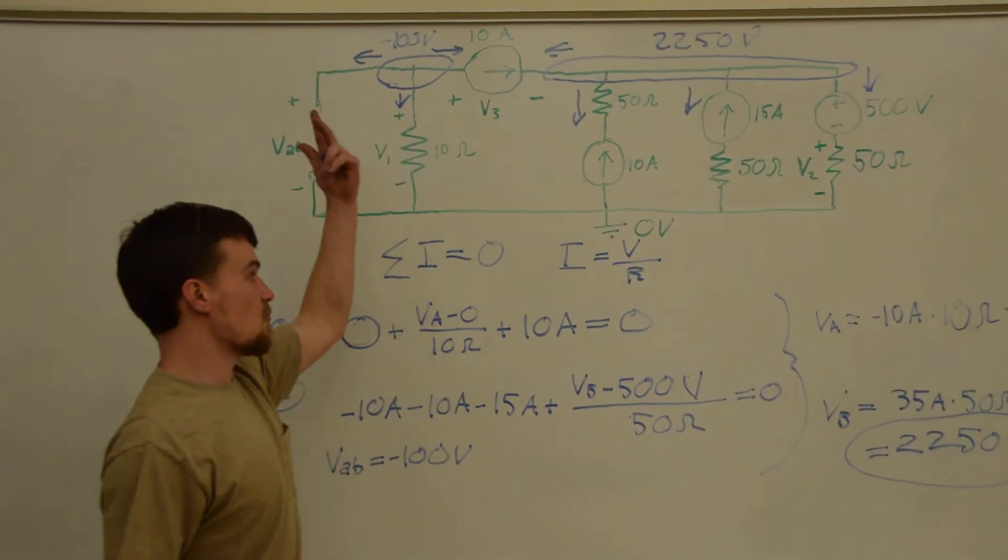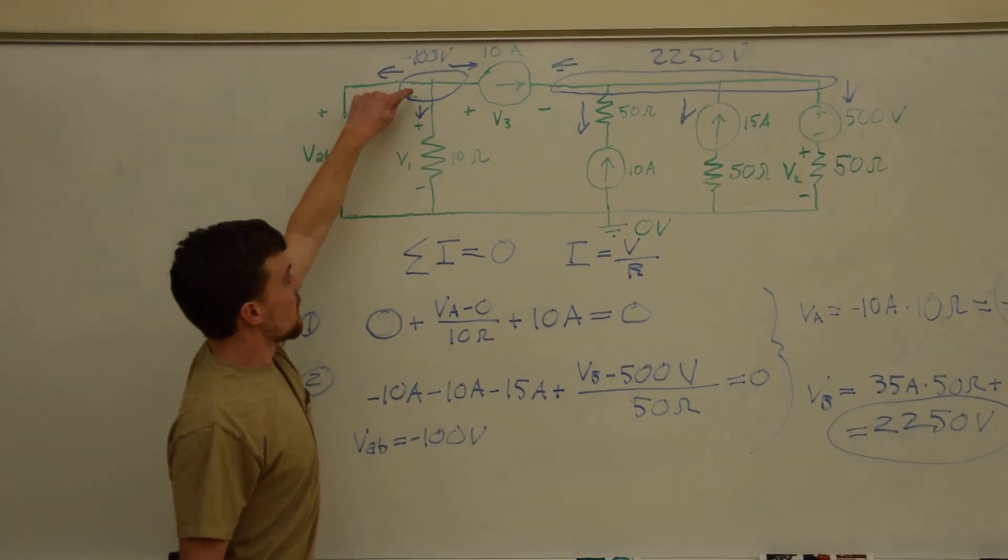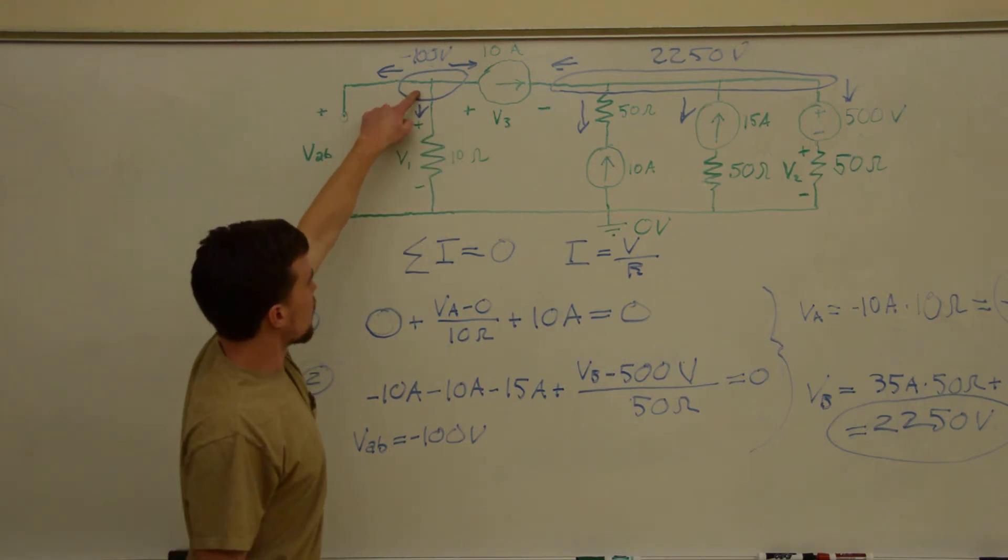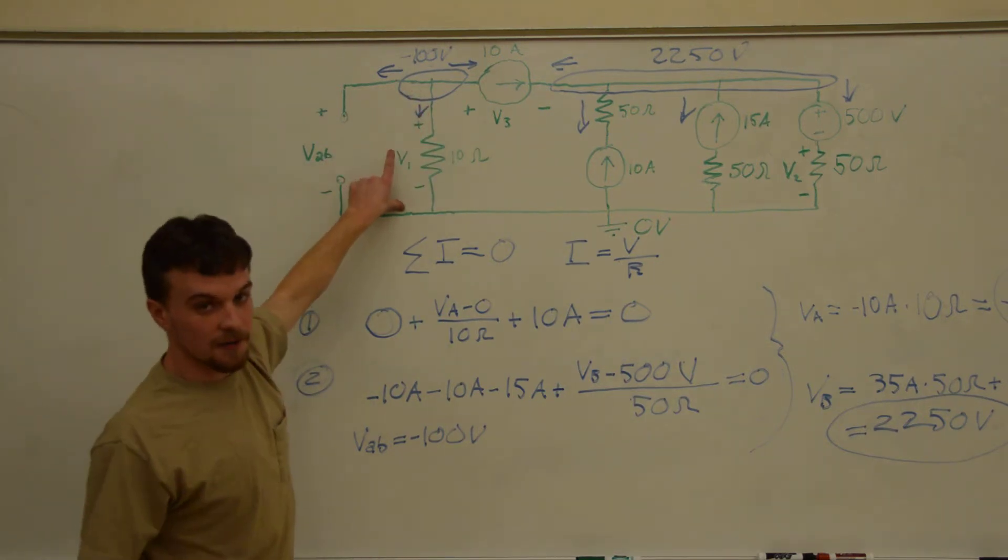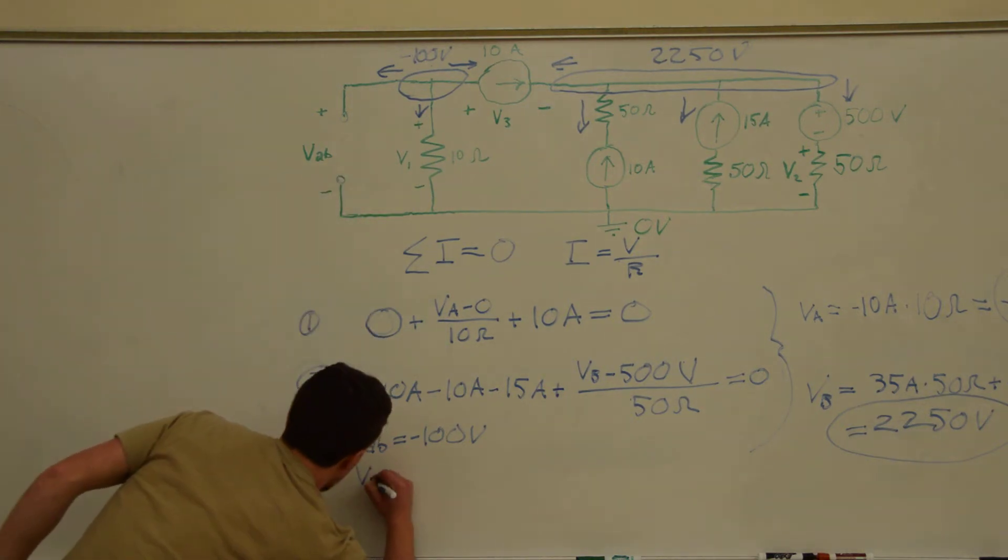Next, we'll do V1, which is right here. Again, that's just the voltage across that resistor, which is also negative 100 volts.